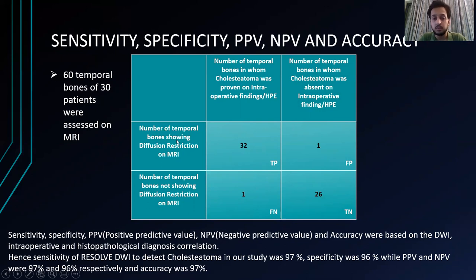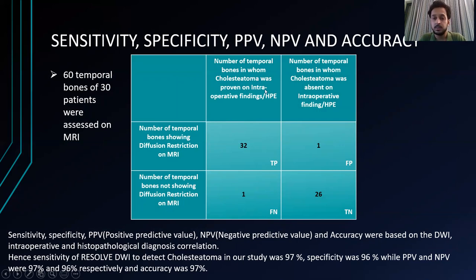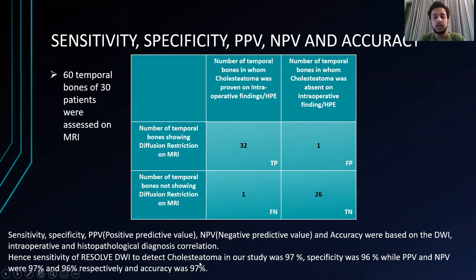Considering each patient has two temporal bones: the number of temporal bones showing diffusion restriction on MRI with positive intraop and HP findings were 32 — true positives. Temporal bones showing diffusion restriction on MRI but negative on intraop and HP findings were 1 — false positive. Temporal bones not showing diffusion restriction on MRI but having positive HP and intraop findings was 1 — false negative. Temporal bones not showing diffusion restriction and also negative on intraop findings were 26 — true negatives. The sensitivity was 97%, specificity 96%, positive predictive value 97%, negative predictive value 96%, and accuracy 97%.